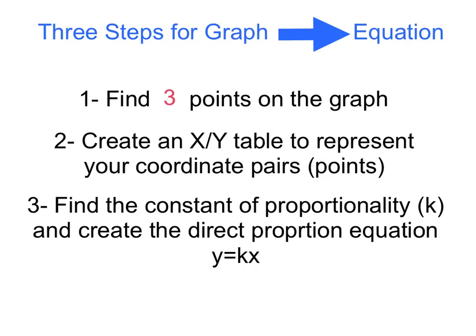So these are our three steps that we have to go from a graph to an equation. First is we want to find at least three points on the graph. Our second is we want to create an X/Y table to represent your coordinate pairs or your points that we found in step one. And last but not least, we're going to do our third step, which is find the constant of proportionality, or that k we've been talking so much about. And then we want to use that k to create a direct proportion equation, which is y equals kx.